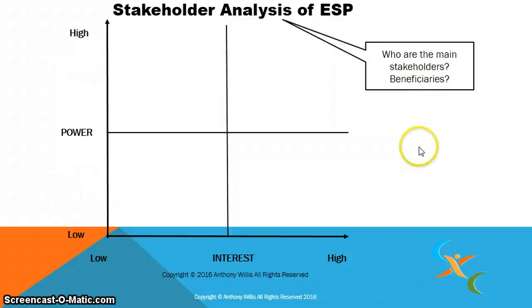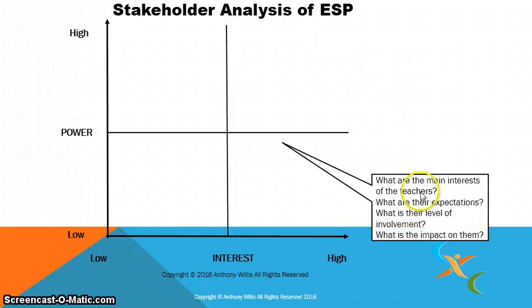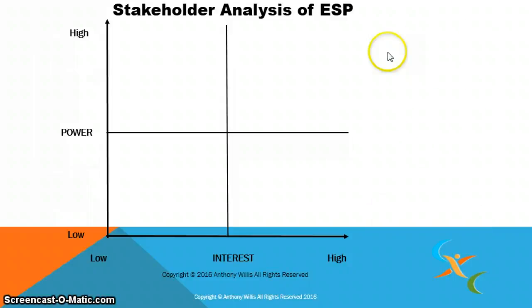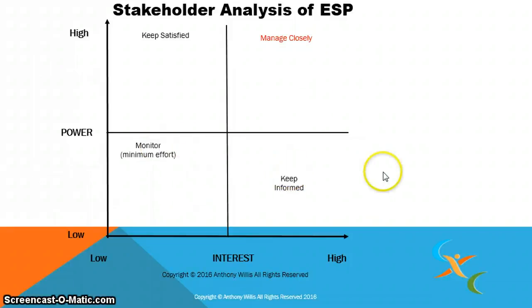What are the main interests of the teachers? Teachers are stakeholders. What are their expectations? What is their level of involvement? What is the impact on them? These are key questions that must be answered to do a proper stakeholder analysis for the program to be successful. In this area of the matrix, you have to keep these people satisfied; in another area, manage closely; another, monitor with minimum effort; and another, keep informed.